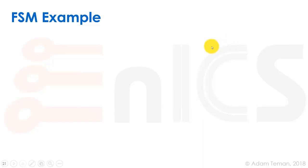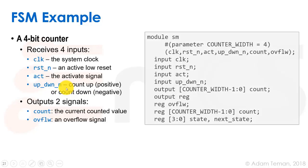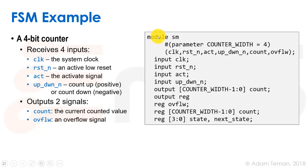Let's start a state machine example — it'll be a four-bit counter. Our four-bit counter has four inputs: the system clock called 'clock', a low-active reset called 'reset_n', an activate signal which is kind of an enable that says if we're going to count or just do nothing, and a signal 'up_down_n' that says if we're going to count up or down. It has two output signals: 'count', a bus that tells the current count value, and 'overflow', which goes high if we passed 1111 or went below 0000.